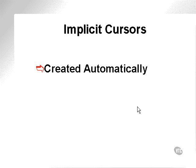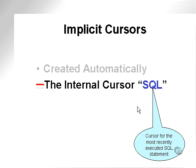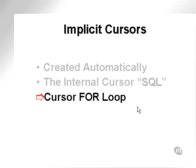So what is an implicit cursor? It's created automatically. There is an internal cursor contained within PL/SQL called SQL. Access to the methods, types, and values within this cursor will give you results applicable to the most recent SQL statement executed within your session. Aside from that, one of the implicit cursors used in Oracle PL/SQL is called a cursor FOR loop.